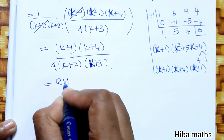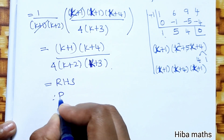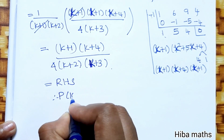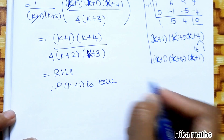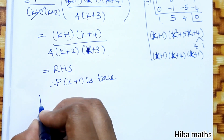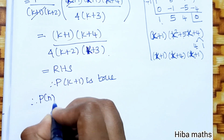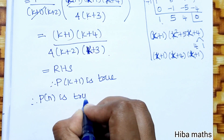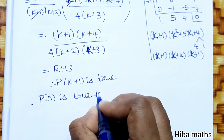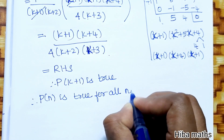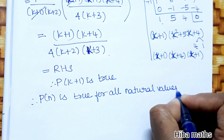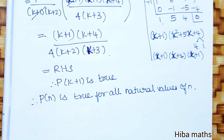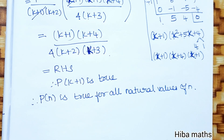Therefore P(k+1) is true. By the principle of mathematical induction, P(n) is true for all natural values of n. Everyone understand? Please let me know in the comment section. Thank you so much for watching.